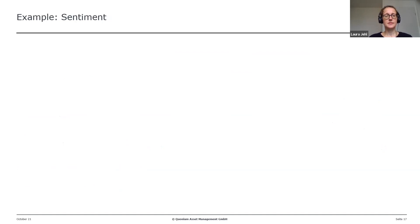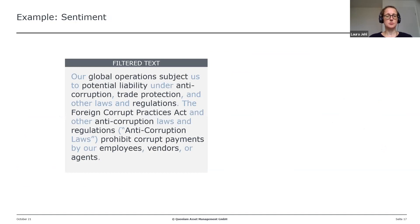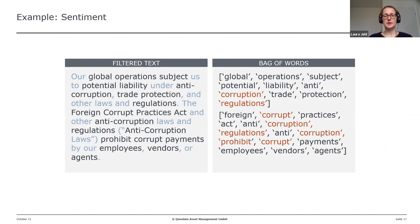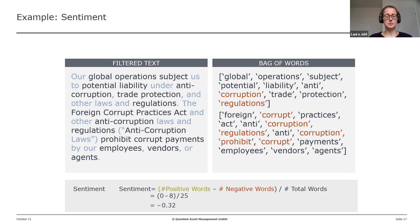Here's an example of sentiment extraction. We start with filtered text, removing stop words and punctuation and lowercasing all words, ending up with a bag of words. We then keep only the sentiment-bearing words — in this case only negative words — and compute sentiment as the number of positive minus the number of negative words, normalized by total word count. In this example we end up with a negative sentiment score of minus 0.5.